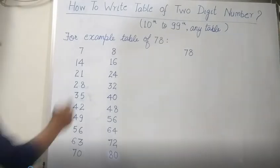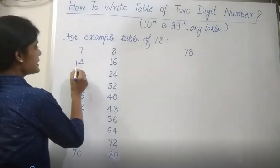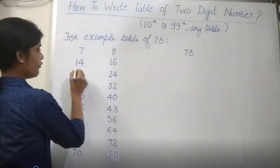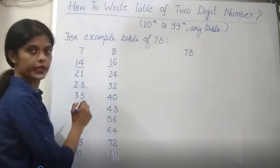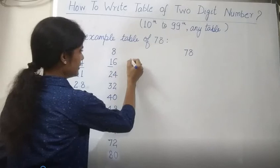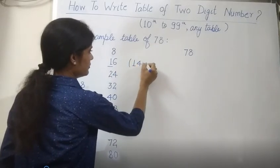Now, what do we want to do? 7 table and 8 table, we will have 14 and then 8 table first digit number, that is, 14 plus 1.